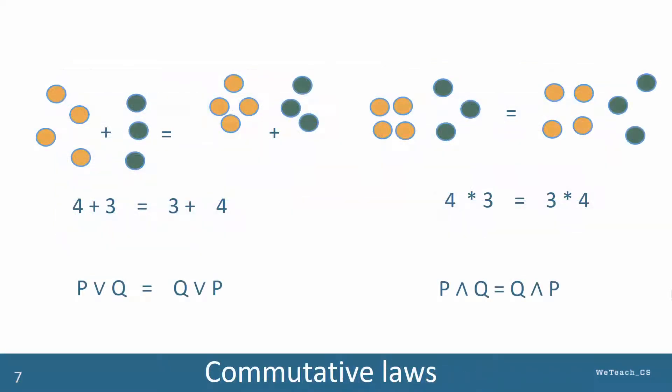The commutative law works with logic in the same way that it works with mathematics, addition and multiplication, as you can see in this diagram. The operation result is the same even when the operands are reversed.